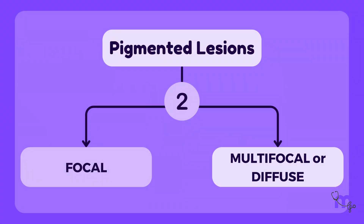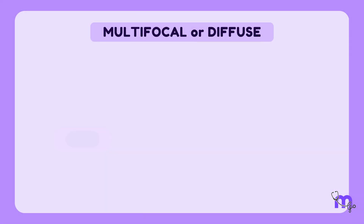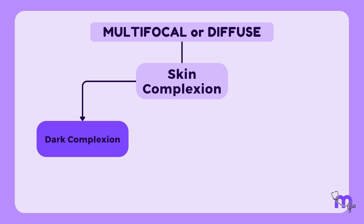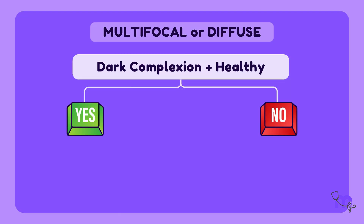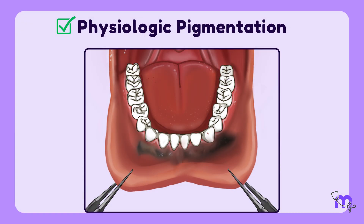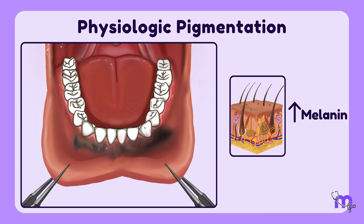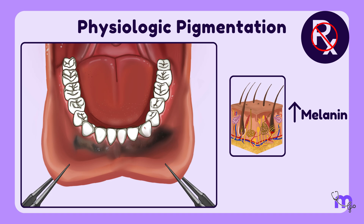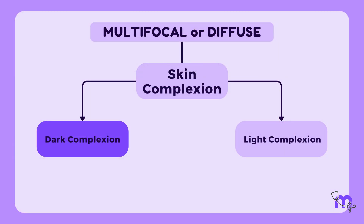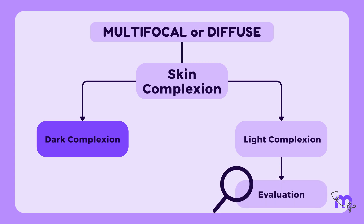For multifocal or diffuse pigmented lesions, the first step involves assessing the patient's skin complexion — either dark or light. If the patient has a dark complexion and is otherwise healthy, the dentist concludes the lesion is physiologic pigmentation, meaning it is a normal variation due to increased melanin production and doesn't require further treatment. For patients with dark complexion who are not in good health, or for patients with light complexion, further evaluation is necessary.